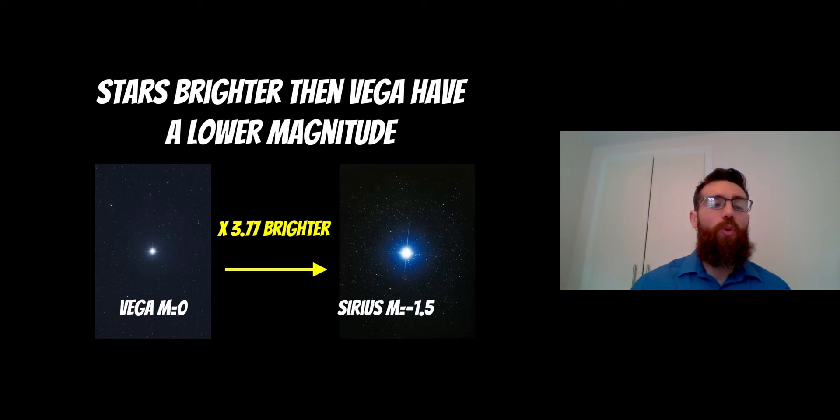A star that would be brighter—here we have Sirius, which is brighter than Vega—has a negative magnitude. It has a lower magnitude as they get brighter compared to Vega. Sirius has a magnitude of minus 1.5, which means it's actually 3.77 times brighter than Vega when compared in the same sky.